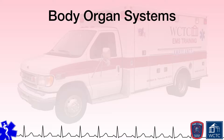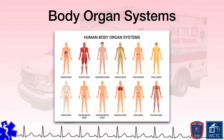To assist us in the study and understanding of the body and how it functions, it is common to evaluate the anatomy and physiology of the body's various organs in conjunction with other organs that serve like or similar functions. The compilation of organs into groups that serve very specific and related functions creates several recognized body organ systems. Within the following slides, we will identify the various organ systems, list the organs within those systems, and define the overall purpose or function of the respective systems.